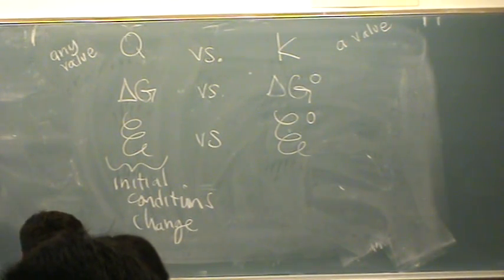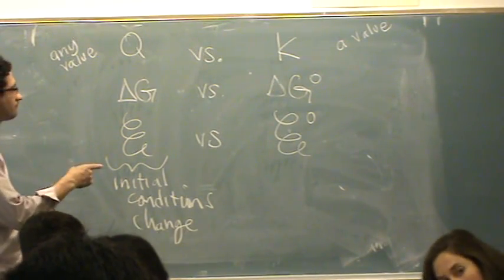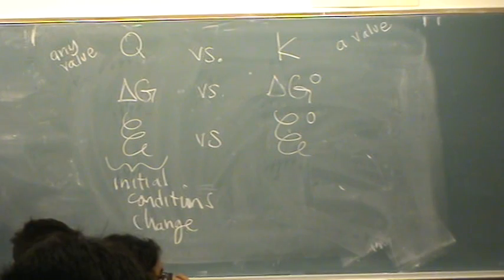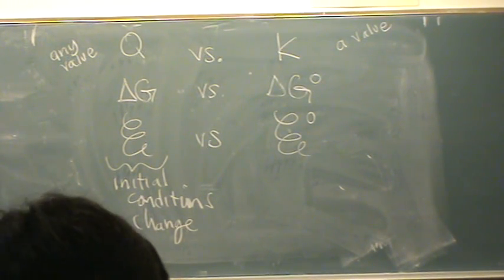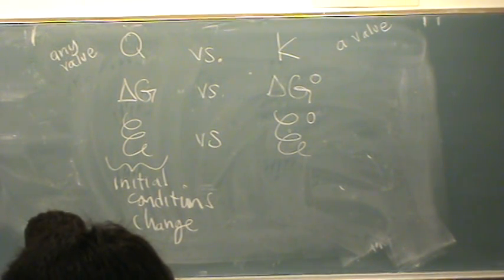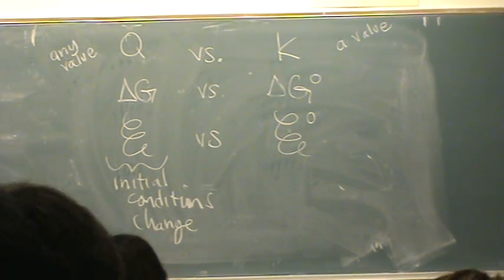So if like your delta G and your E, if they were in the conditions of standard, would they be equal? Yeah. Okay. Yeah, they would be equal if you were in standard conditions. Yeah. Just by chance. Yeah, by chance. Okay. That's never going to happen. I'm just wondering though. Totally right. Yes.